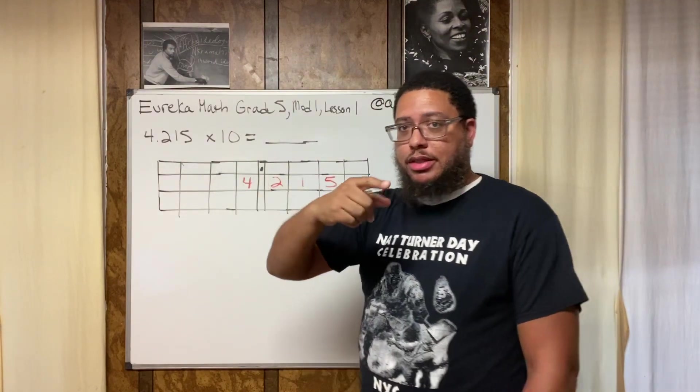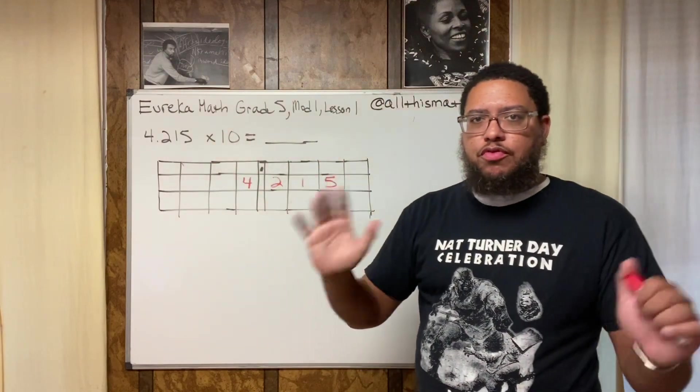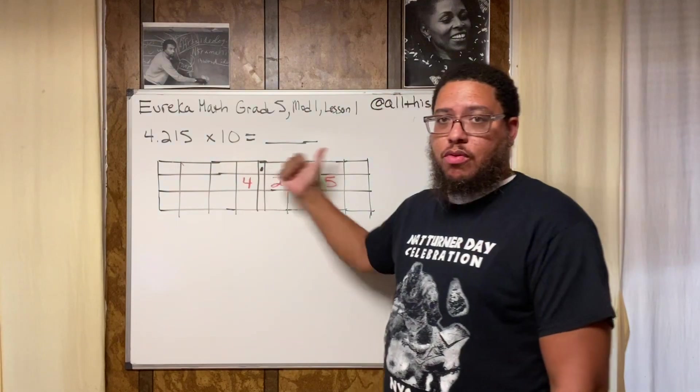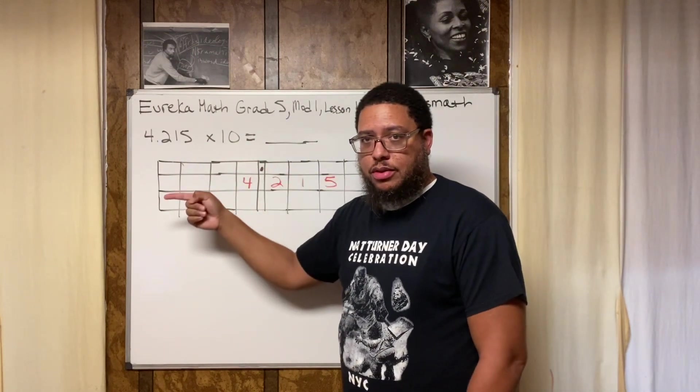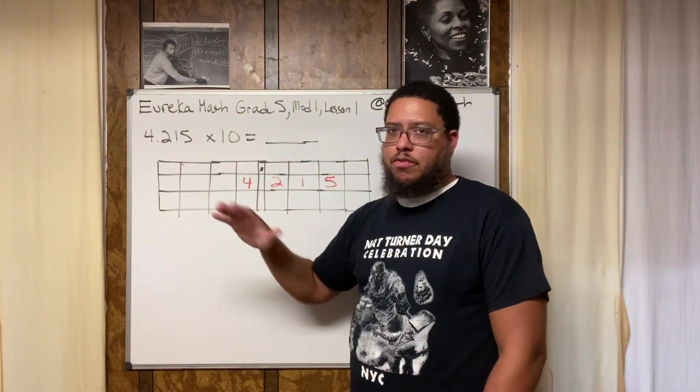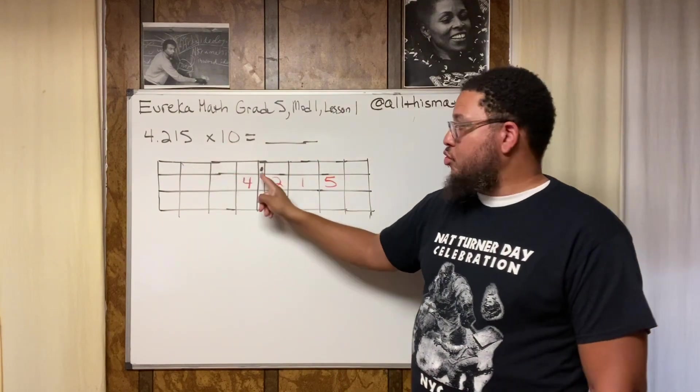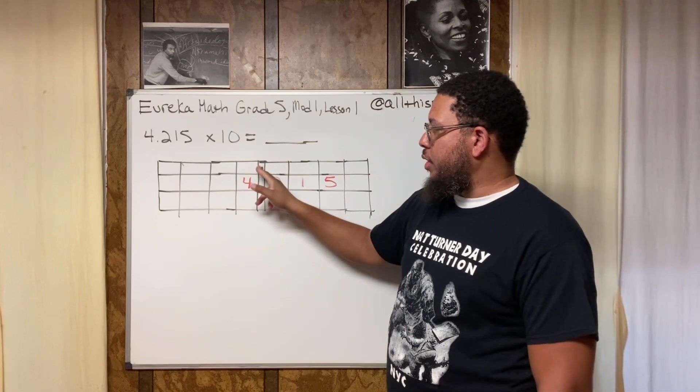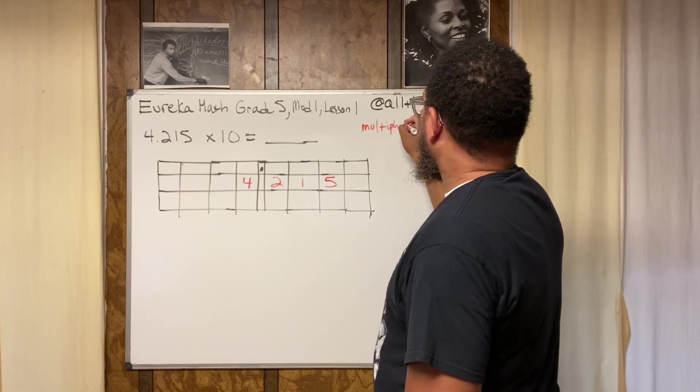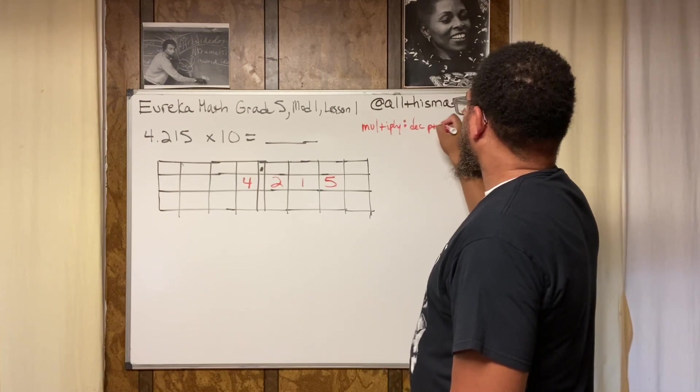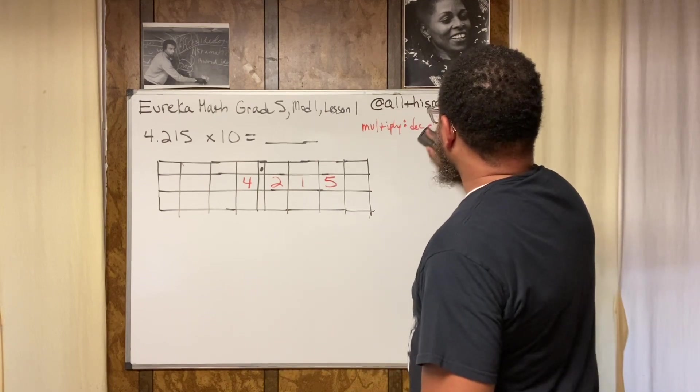Now whenever you're doing multiplication, and you should write this down, whenever you're doing multiplication, the numbers are going to move to the left. The numbers are going to move to the left. Now I know that gets, that's where it gets a little confusing, because back in the day we would move the decimal point to the right. But understand you're going to end up with the same result. Moving the decimal point to the right or moving the numbers to the left yields the same result. So check this out. We're multiplying. Whenever you multiply, you move the decimal point to the right, decimal point to the right. So let me write that down. Multiply, decimal point to the right. Actually no, no, no, no. That's not what I meant to say. See, old habits die hard.